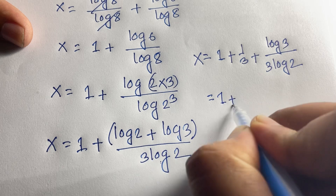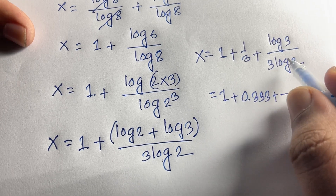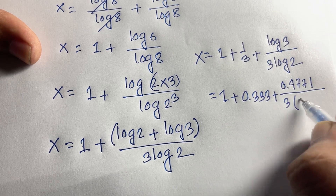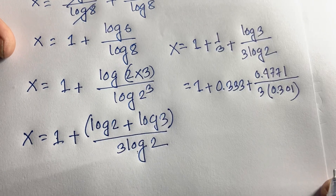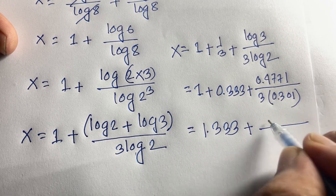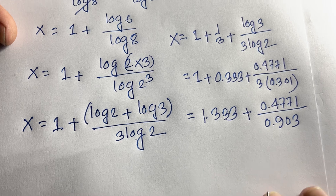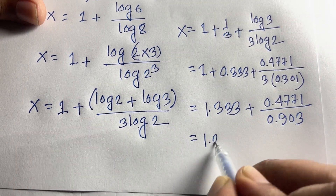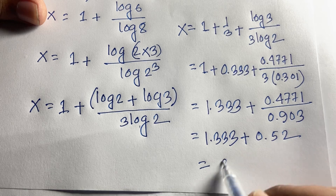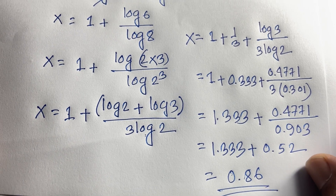At this moment, 1 plus 0.333 — since 1 divided by 3 is 0.333. And log 3 is 0.4771, and 3 times log 2 is 3 times 0.301 which equals 0.903. So we get 1.333 plus 0.4771 over 0.903, which gives 1.333 plus 0.52, equaling approximately 1.86. This is our final answer to this interesting math question, solved without a calculator.